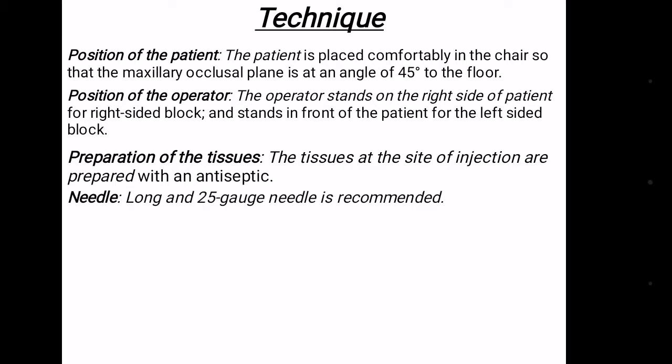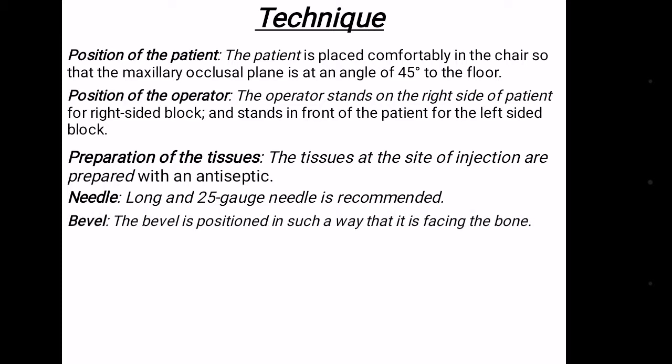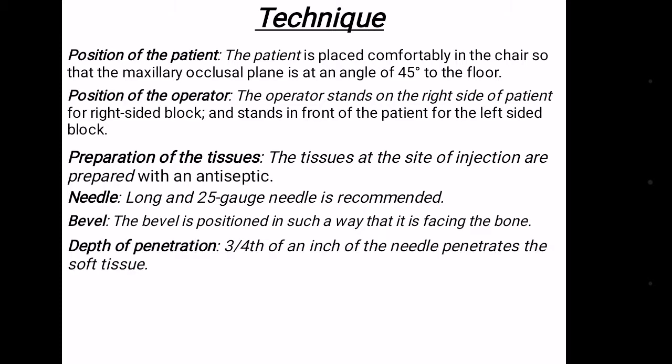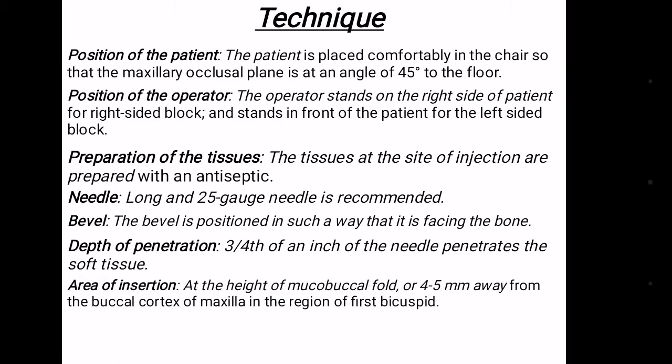A long 25-gauge needle is recommended. The bevel is positioned facing the bone. Three-quarters of an inch of the needle penetrates the soft tissue. The area of insertion is at the height of the mucobuccal fold, 4–5 mm away from the buccal cortex of the maxilla in the region of the first bicuspid.